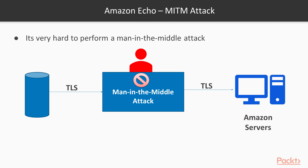The protocol Amazon uses is TLS — Transport Layer Security — which is a strongly encrypted protocol. When the Amazon Echo sends encrypted data to Amazon servers, the attacker cannot decrypt it during a man-in-the-middle attack. For example, even if you use Wireshark to capture packets, you cannot decrypt TLS traffic. So while a malware attack is possible, a man-in-the-middle attack is not possible on Amazon Echo.